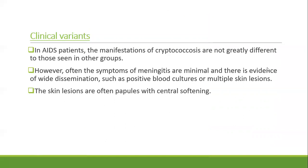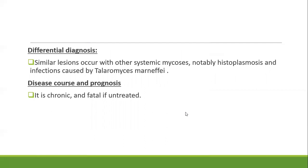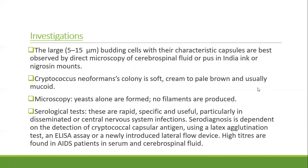In AIDS patients, manifestations of cryptococcosis are not greatly different from those seen in other groups; however, other symptoms of meningitis are minimal and there is evidence of wide dissemination such as positive blood culture or multiple skin lesions — skin lesions are papules with central softening. Differential diagnosis includes histoplasmosis and other fungi like Talaromyces. The disease has a chronic course and is fatal if untreated.